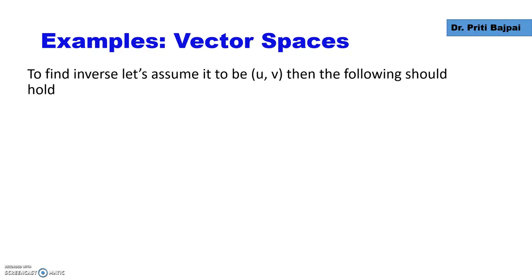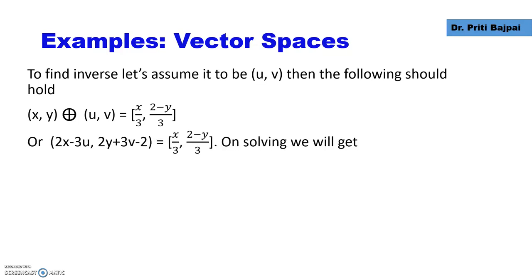Now inverse has to be found. What is the role of inverse? It means when we add the inverse to a vector, it should give us the identity. So we will find the inverse. Let's say the inverse is (u,v). We'll add (u,v) to (x,y). We will follow the rule of addition as it has been defined.